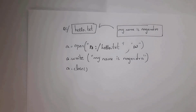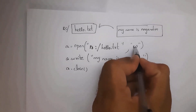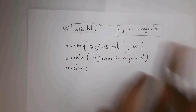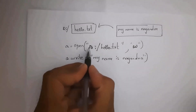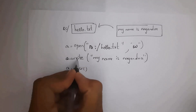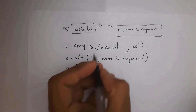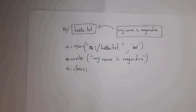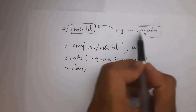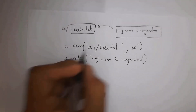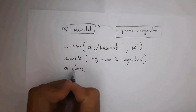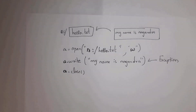I want to add text, so I open this file in write mode. Next, to add the text 'my name is nagendra', I use the write method: a.write('my name is nagendra'). Whenever you run this line of code it will add that text into hello.txt. After performing the operation, we need to close our file using the close method: a.close().